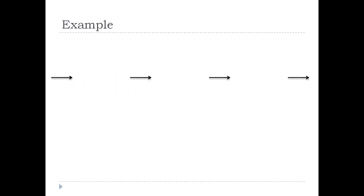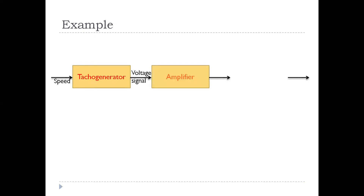We will see an example of a measurement system to measure the speed of a shaft. The speed of the shaft is given as the input. We use a tachogenerator as the sensor, whose output is a voltage signal. This voltage signal is given to the signal conditioning unit — in this case an amplifier — which produces an amplified voltage signal. This amplified voltage is then given to the display unit, which shows the value of the measured speed.